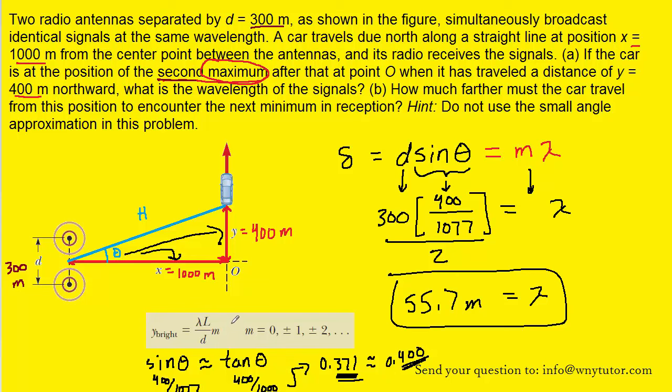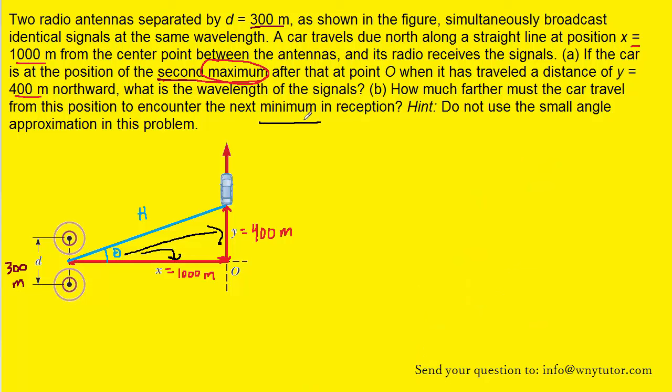We can now move on to part b. Now part b is asking about a minimum in reception. Now a minimum, as we mentioned earlier, is an indication of destructive interference. So we can write down the same path difference formula, but this time we're going to be looking at destructive interference. Notice in this case we've used the term m plus 1 half as opposed to just m. Remind yourself that earlier we used m for constructive interference. When it's destructive, we want to use m plus 1 half.